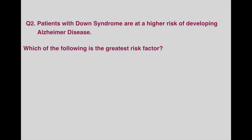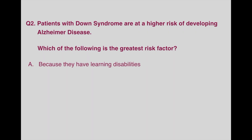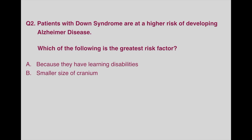Question number 2. Patients with Down syndrome are at a higher risk of developing Alzheimer's disease. Which of the following is the greatest risk factor? Option A, because they have learning disabilities. Option B, smaller size of cranium. Option C, extra chromosome copy. The answer to this question is option C.